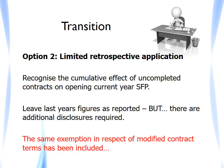Under the second transitional approach — the modified retrospective approach — an entity is not required to restate its comparatives in the first year of adoption; comparatives can be reported under existing accounting policies, for example under IAS 18. However, additional disclosures are required under this approach. The same practical expedient regarding modified contracts prior to the date of adoption has also been included under this transitional approach.